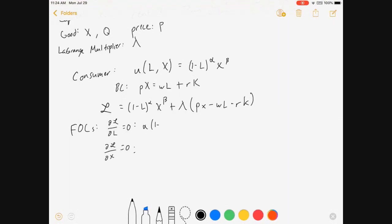Alpha times 1 minus L to the alpha minus 1 times negative 1 times X to the beta, minus lambda W equals 0. Now, I'm going to mess around the negatives a little bit here. I'm going to get rid of a few pieces just for convenience. And it comes out to look like that.